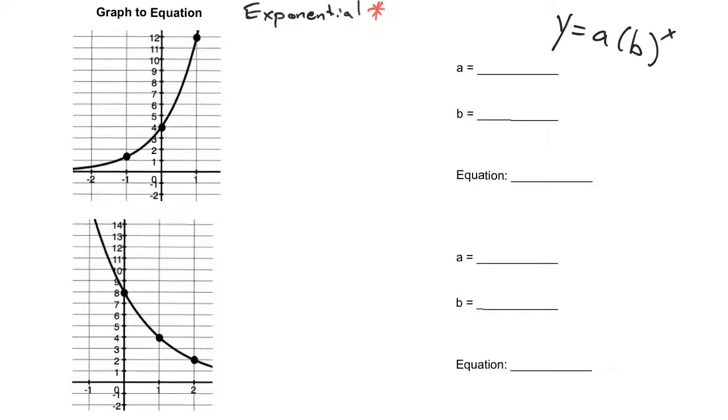a is going to be our y-intercept, or you could say it's the initial value, and b is going to be your multiplier. That is going to be the case every single time for when we're writing our exponential equations.